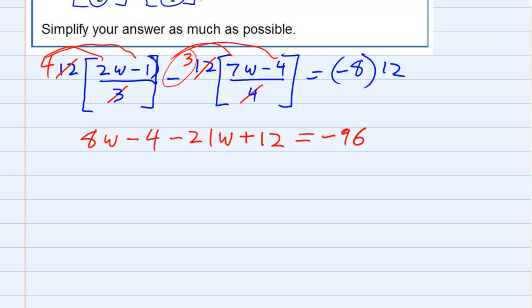So, first looking at like terms, on the left, I have an 8w and a negative 21w. They're on the same side, so I can put them together. The signs are different though, so I'm going to have to subtract and keep the sign of the larger.